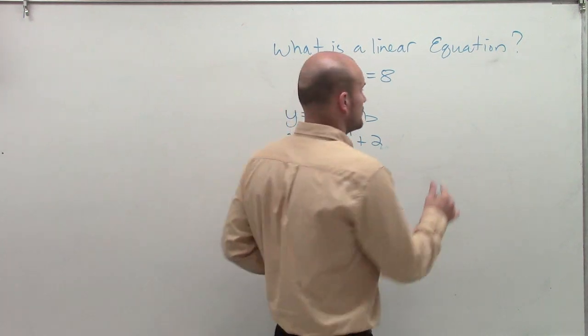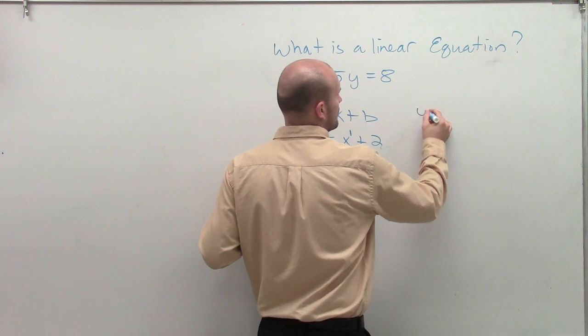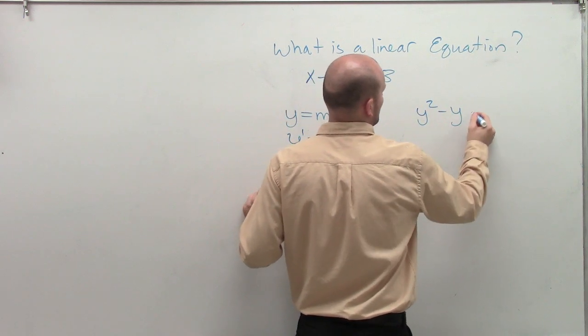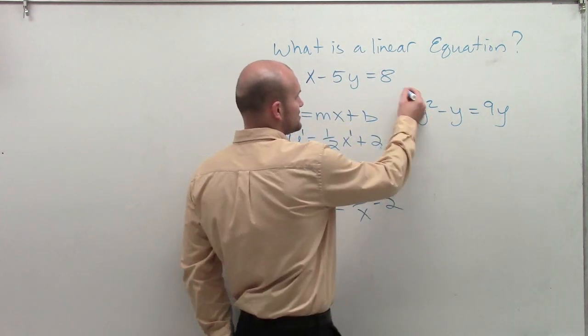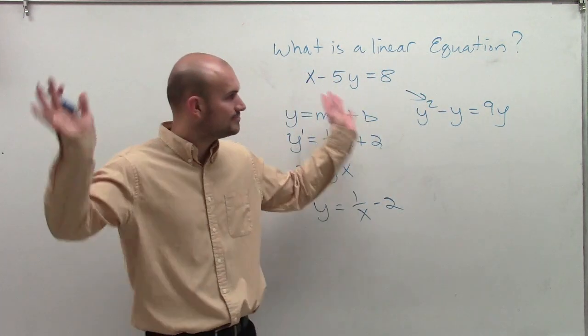What was actually number 12? 12 was y squared minus y equals 9y. Okay. And automatically I can say this is not a linear equation, because of that y squared. Done.